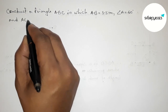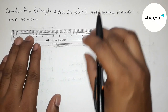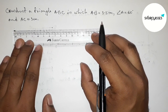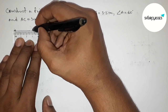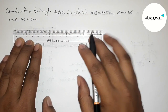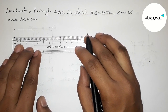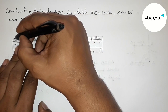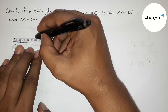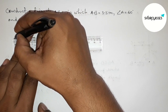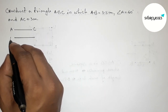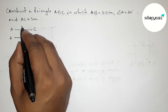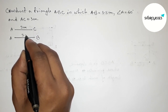Let's start the video. First of all, let us draw the given two sides. Drawing a 3 centimeter line first — this is starting at 0 and this is the 3 centimeter line. Then drawing another 3.5 centimeter line. So this one is the AC line, 3 centimeters, and this one is the AB line, 3.5 centimeters.